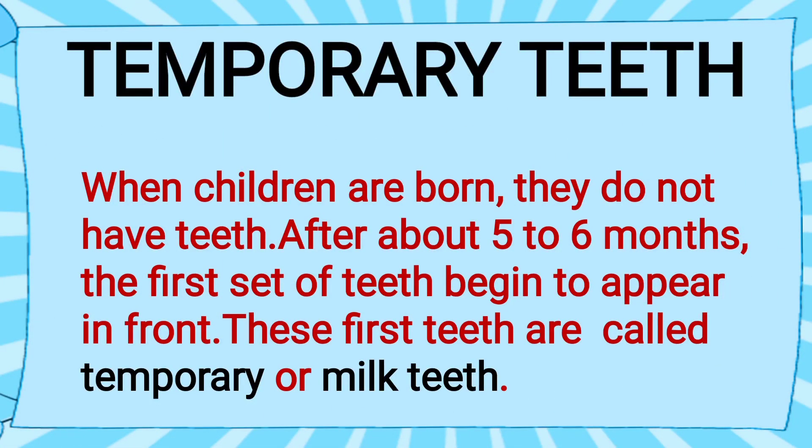Temporary teeth: When children are born, they do not have teeth. After about 5 to 6 months, the first set of teeth begins to appear in front. These first teeth are called temporary or milk teeth. You have all seen small babies — they do not have teeth when they are born, and after a few months they start having teeth in their mouth. Those teeth are known as milk teeth.